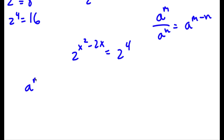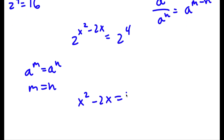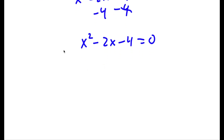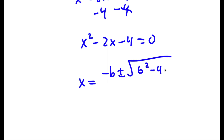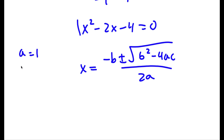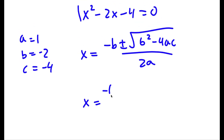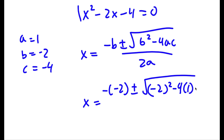Now, if a to the power of m equals a to the power of n, then m equals n. So in this case, x squared minus 2x is equal to 4. Subtracting 4 on both sides, I get x squared minus 2x minus 4 is equal to 0. Now to solve this, I can use the quadratic formula: negative b plus or minus the square root of b squared minus 4ac, all over 2a. In this case, a is equal to 1, b is equal to negative 2, and c is equal to negative 4.